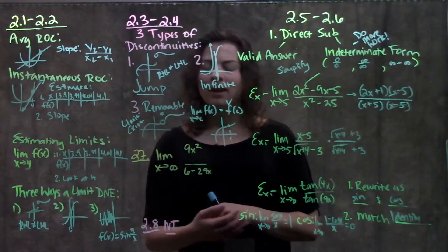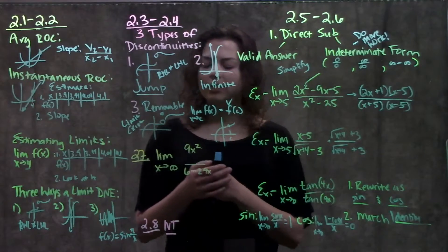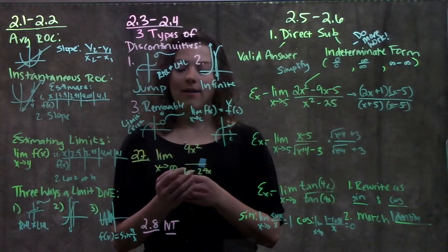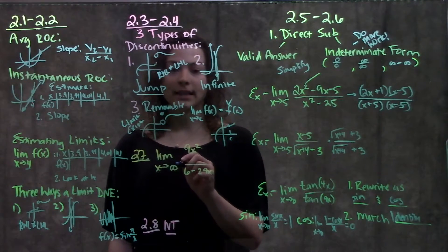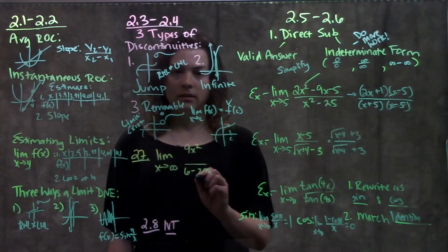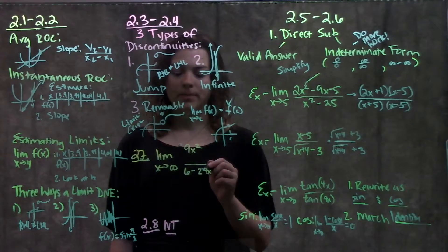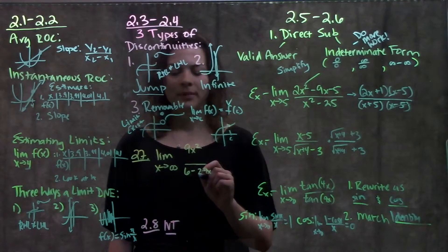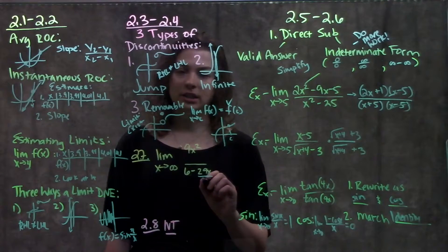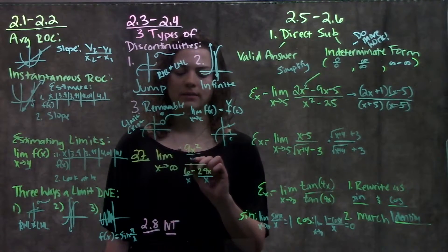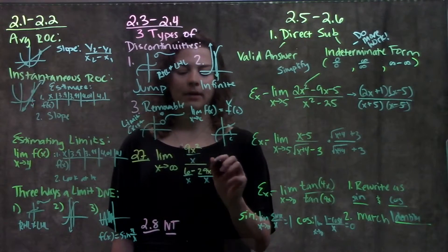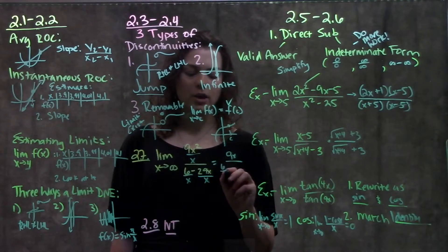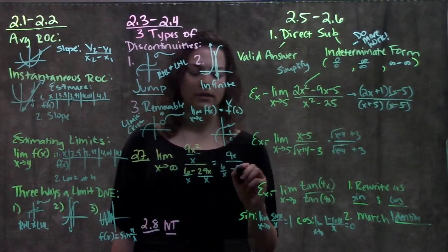Moving on to 2.7, this was limits at infinity. There's a couple different ways we could approach these problems. Right now I'm going to go over the algebraic way of how to solve this limit. If you have a limit as x approaches infinity, we're going to look at our denominator and pick out the highest power, and divide every term in both the denominator and the numerator by this leading power. In this case, our highest power is just x, so we divide everything by x. On the top here, we have an x cancel, so we're left with just 9x. Over, on the bottom, we have 6 over x minus, these x's cancel, minus 29.